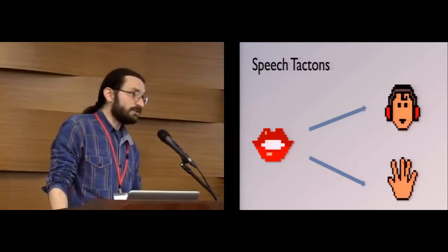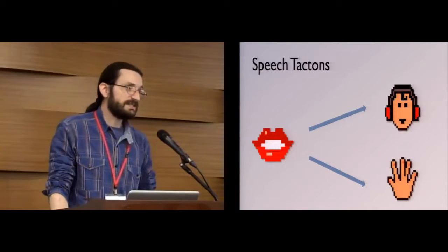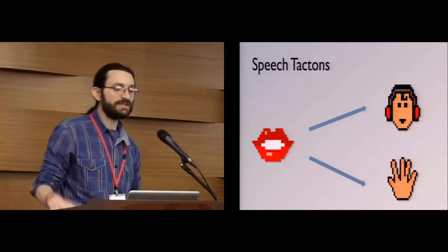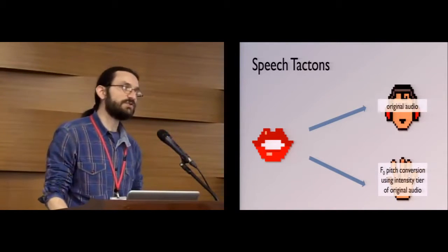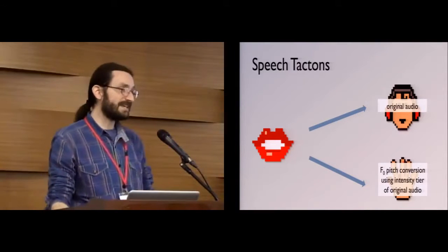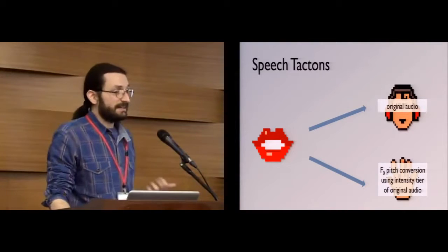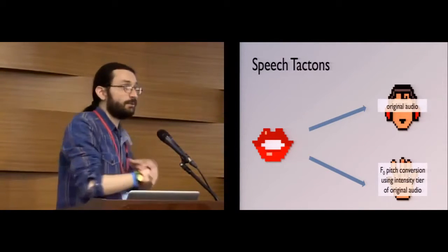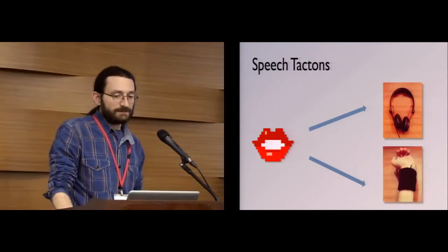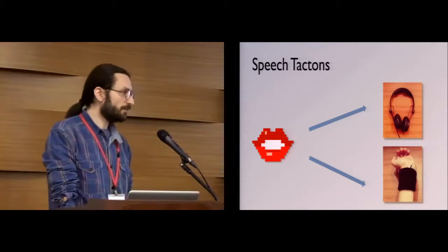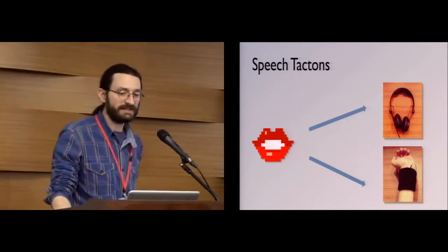We used Speech Tactons as part of the language-based cues. These are vibrational messages derived from audio cues — by taking the original audio file and making simple modifications, we produce a vibrational message with the same rhythm as the audio cue, giving an attenuated feeling of what the person is saying, aided by vibration. The equipment we used was simple headphones for audio cues and a Samsung smartwatch to provide vibrations for the tactons.